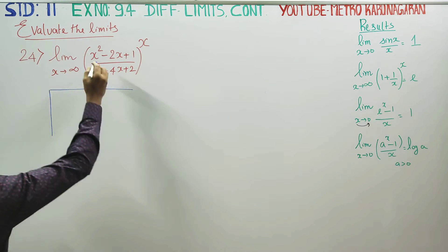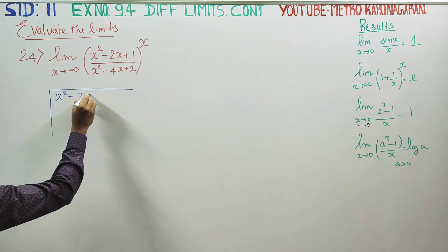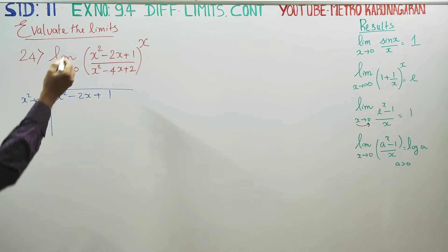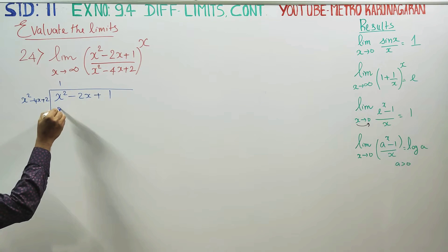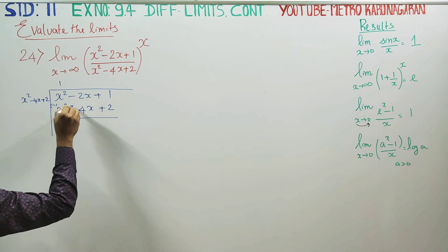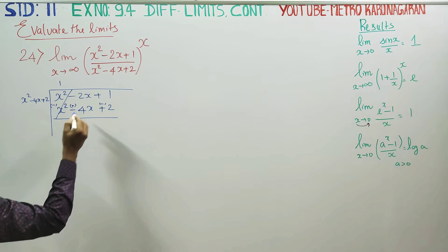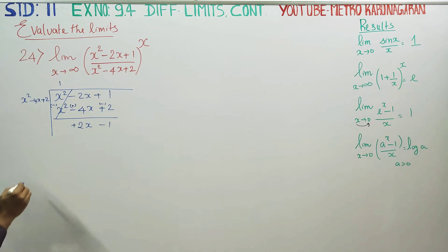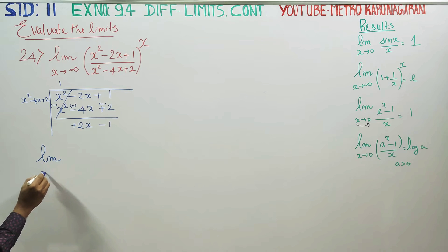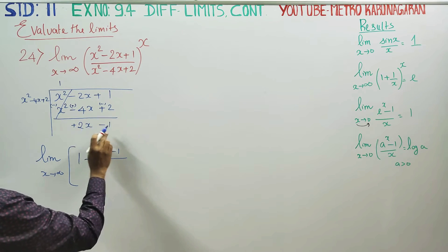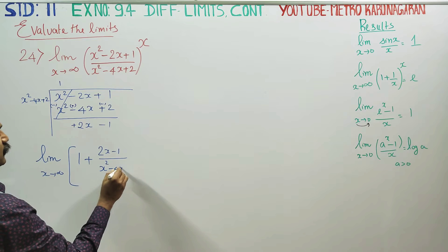I am going to divide x² - 2x + 1 by x² - 4x + 2. Numerator divided by denominator: one times one is one. Then x² minus 4x plus 2, symbol changes to minus, cancel. Remainder is 2x - 1. This sum can be written as limit x turns to infinity, which equals 1 plus the mixed fraction 2x - 1 over x² - 4x + 2.